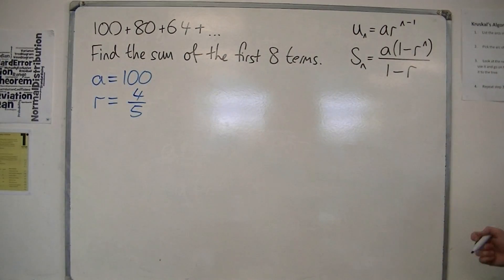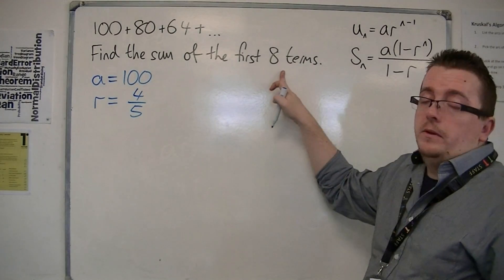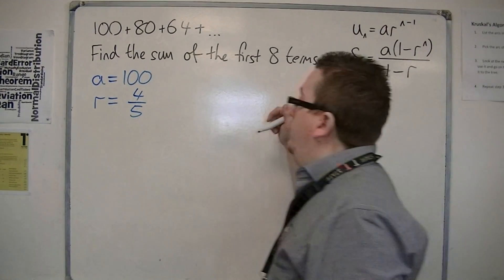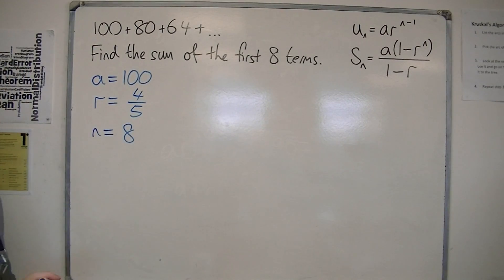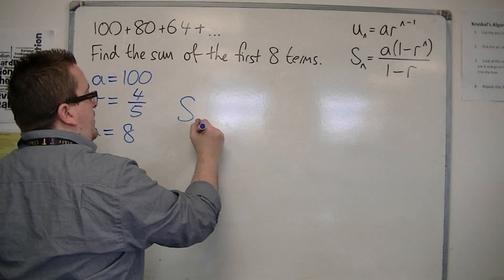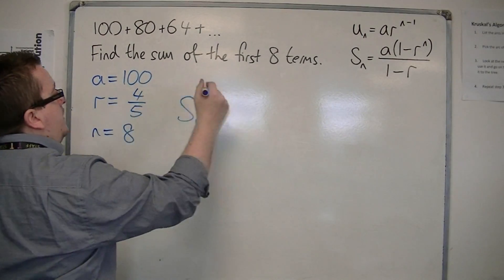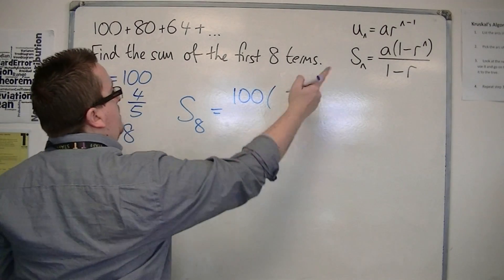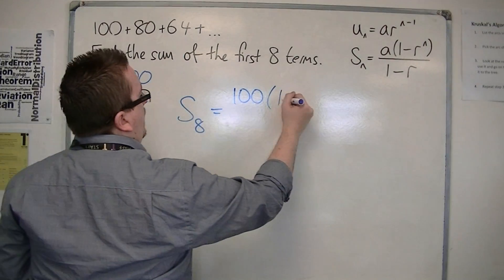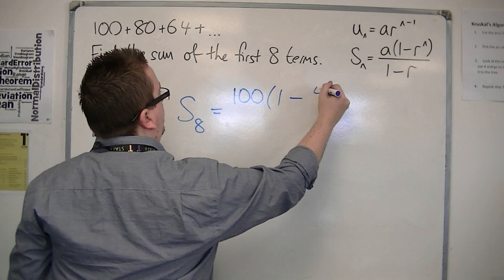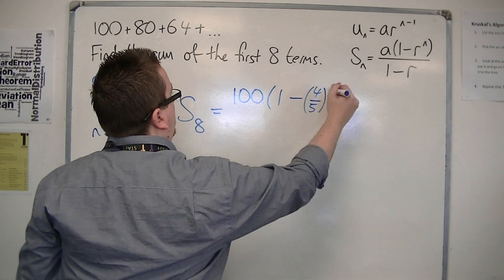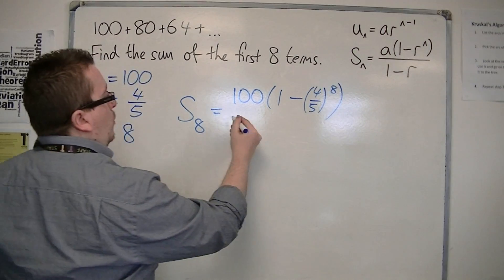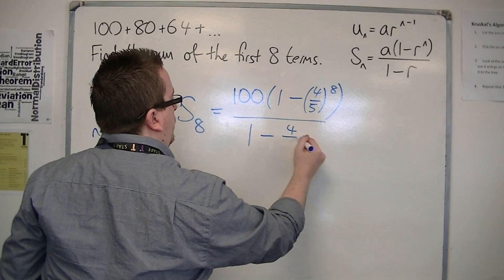Now N is 8, because I want the first eight terms. So S8 is equal to A times 1 minus R to the N, so 100 times 1 minus 4 fifths to the 8, all over 1 minus 4 fifths.